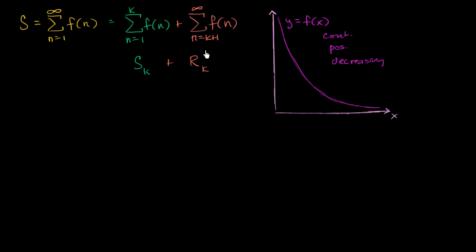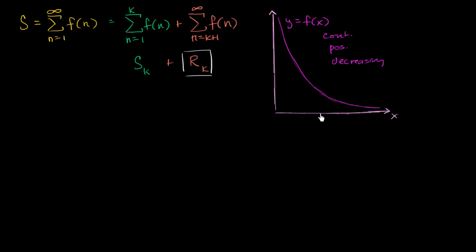So the key is: can we come up with some bounds for this remainder? To do that, I'm going to use this graph and the same conceptual ideas we used for the integral test. There are two ways to conceptualize what the sum represents relative to this graph — it can represent an overestimate of the area between some x value and infinity, and it could represent the underestimate of a different region.